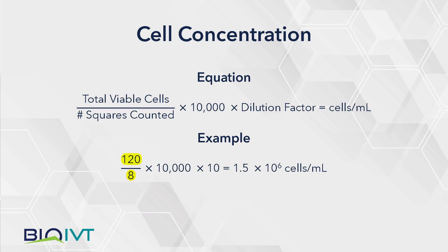Viable cells per square is then multiplied by 10,000. 10,000 represents the hemocytometer conversion factor for the volume in the chamber. To account for cell dilution, multiply the product of the previous step by 10. The result of these calculations is the total number of viable cells per milliliter.